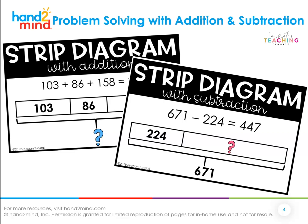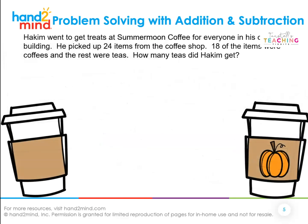We're going to practice strip diagrams to help us problem solve with addition and subtraction. Let's do this one together. Hakeem went to get treats at Summer Moon Coffee for everyone in his office building. He picked up 24 items from the coffee shop — 18 of the items were coffees and the rest were teas. How many teas did Hakeem get? So I know for a strip diagram, one part is the whole. I need to write a bracket. The bracket can be at the top or the bottom — it's the same. We're going to do the bracket at the top.